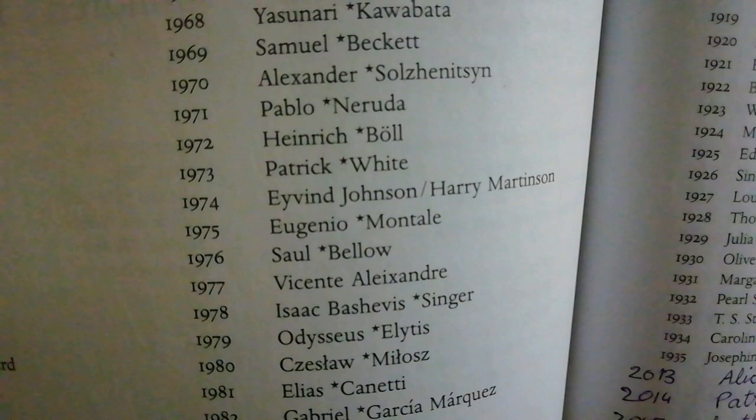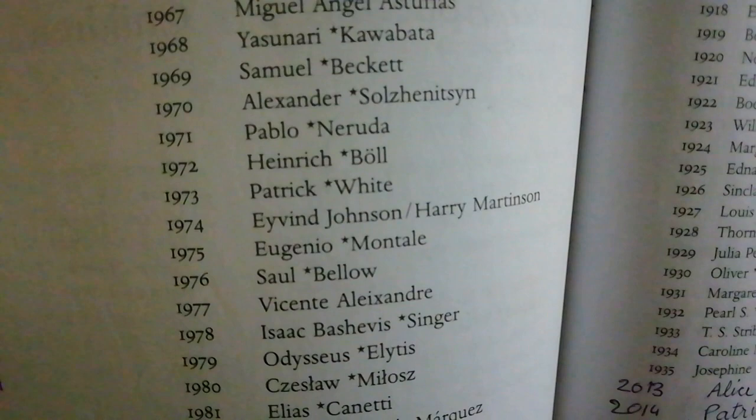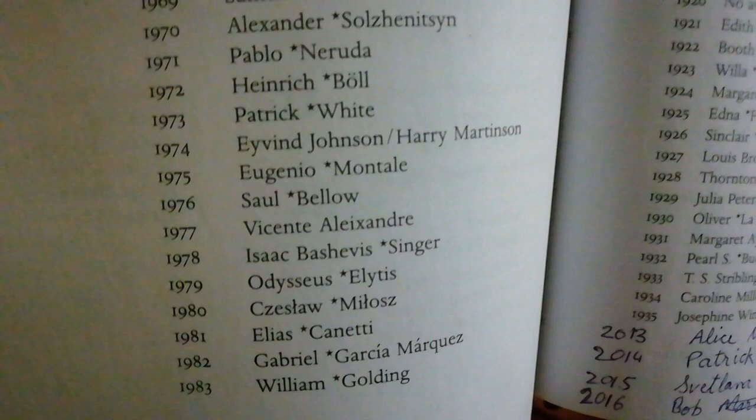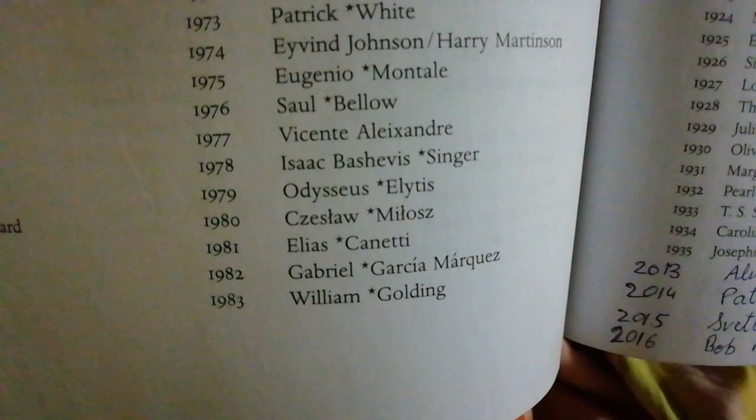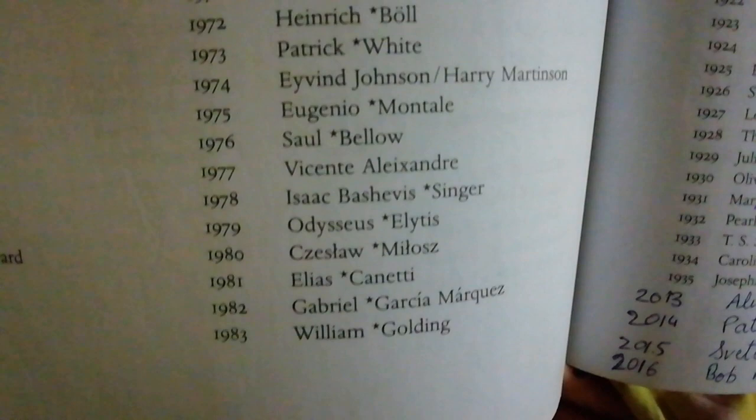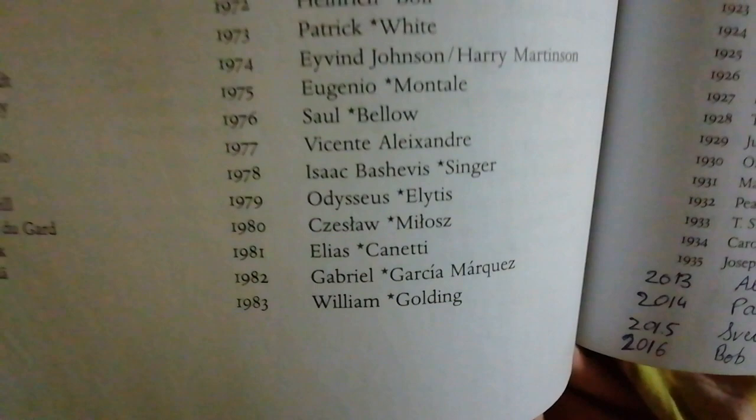1969 the Nobel Prize goes to Samuel Beckett — great, silent works and brilliant. Pablo Neruda 1971 — great works. 1973 Patrick White — first Australian to win the Nobel Prize, so very important. 1976 Saul Bellow — very brilliant writer with very interesting works. 1982 Gabriel García Márquez — great works with a very different kind of structure. 1983 William Golding — one of the very deep and authentic works.